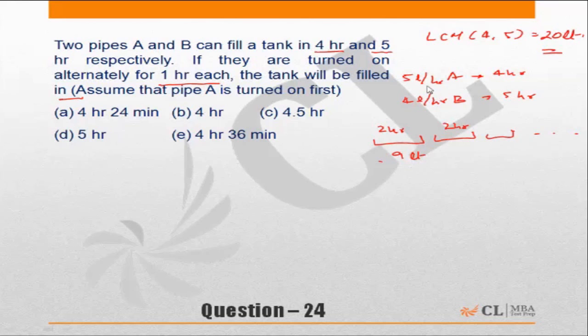They will do 9 liters in every block of 2 hours: 5 liters in the first hour by A, 4 liters in the second hour by B. So in 4 hours, 18 liters have been taken care of and we are left with 2 liters balance.